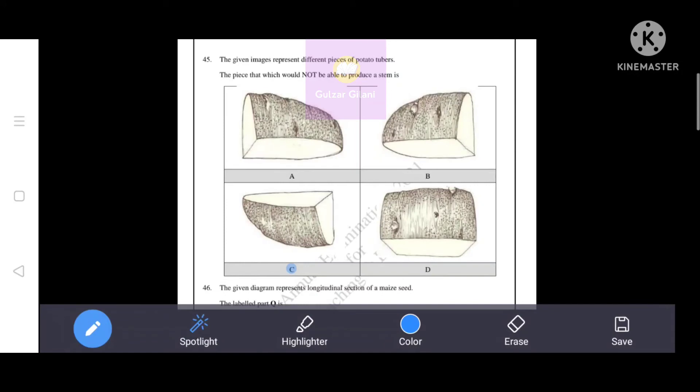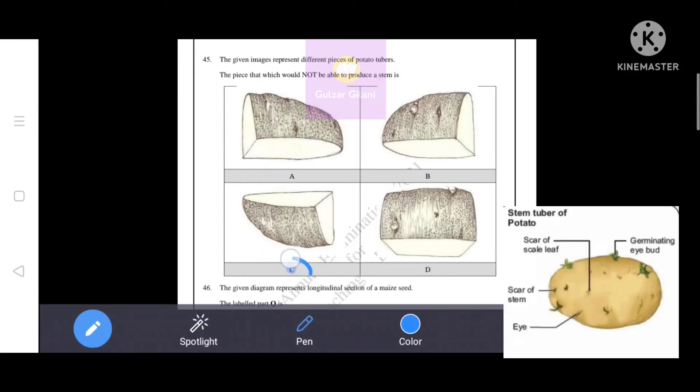Next question. The given images represent different pieces of potato tubers. The piece which would not be able to produce a stem is - given options, the correct answer is option C, option D.